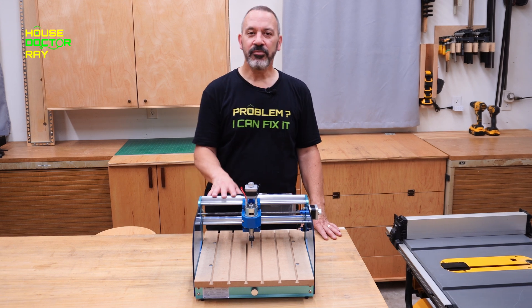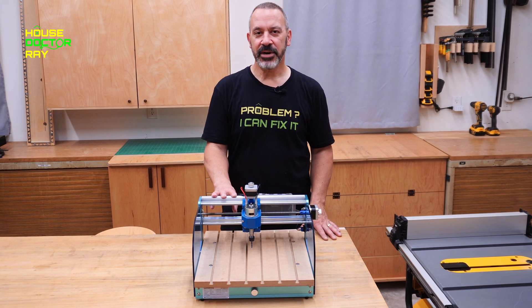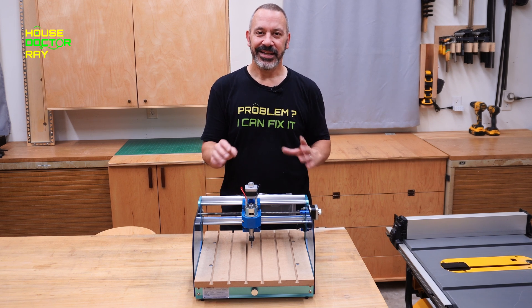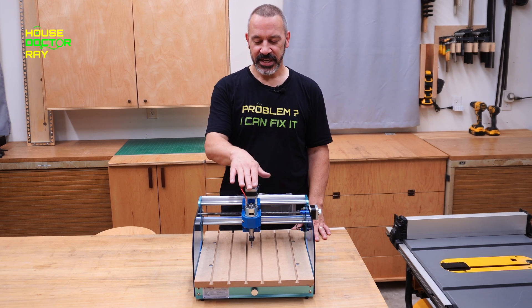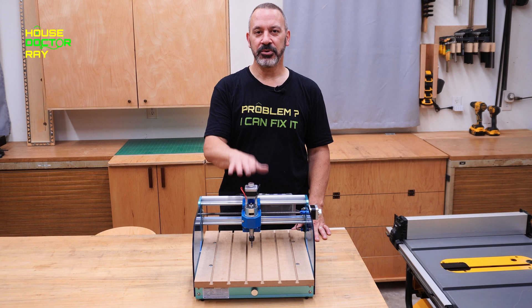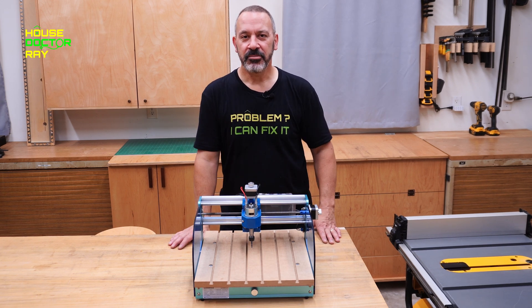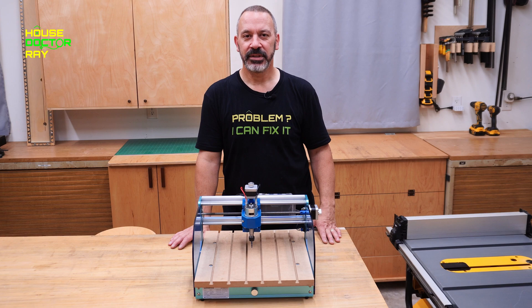Thanks for stopping by. If you have one of these 3018 CNC routers, you're likely to have the same problem that I have with mine, and that's that the bearings for the Z-axis, the part that makes the spindle go up and down, come loose from the plastic housing. I'm going to show you how to fix that today. Let's get to it.